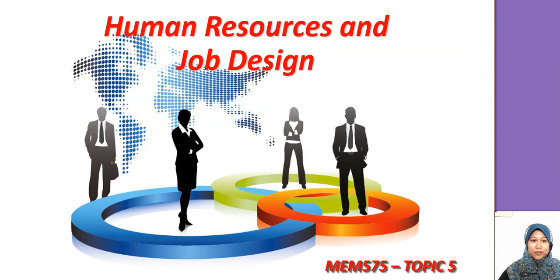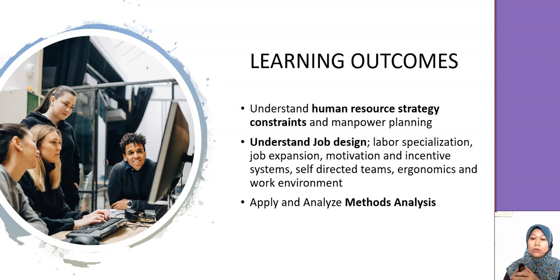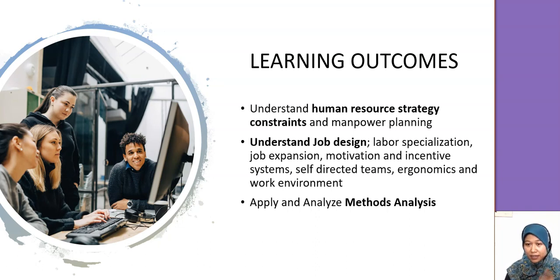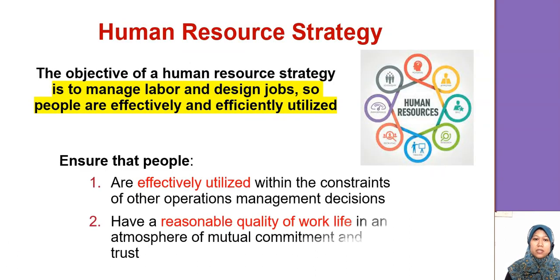Today we're going to do Topic 5 on Human Resource and Job Design. Human resource deals with the employees — the humans involved in manufacturing or service. The learning outcomes for this topic are: first, to understand human resource strategy constraints and manpower planning; then, we will look into job design categories; and finally, we'll do some calculation in method analysis, specifically time study.